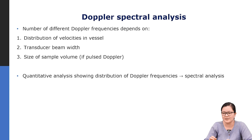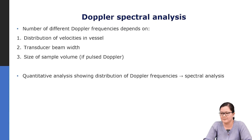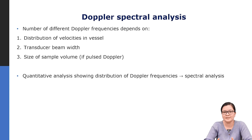The number of different Doppler frequencies depends on the distribution of velocities in the vessel. Laminar flow produces a narrow velocity distribution; turbulent flow produces a much wider distribution with scatterers moving in various directions and speeds. The transducer beam width also matters: a smaller beam width interrogates a smaller vessel region with a narrower velocity profile. The sample volume size is also important, especially for pulsed Doppler. This velocity distribution is analyzed through Doppler spectral analysis — a quantitative analysis showing the distribution of Doppler frequencies.